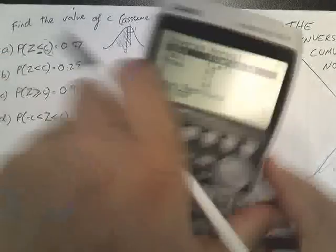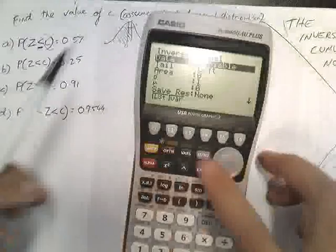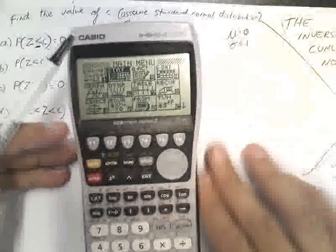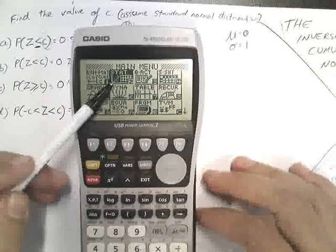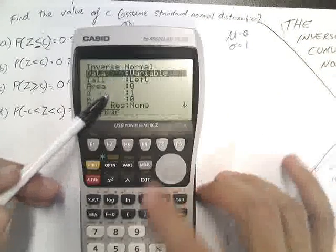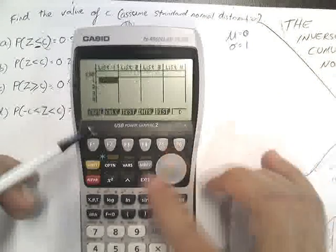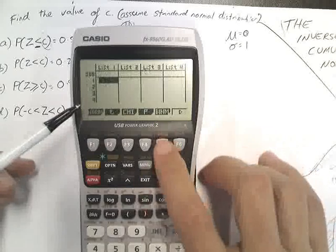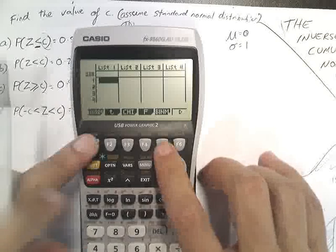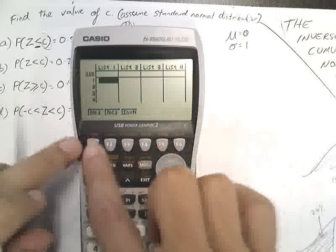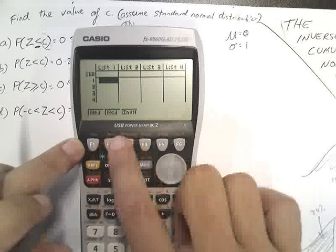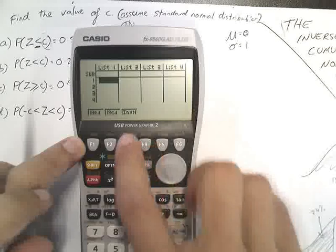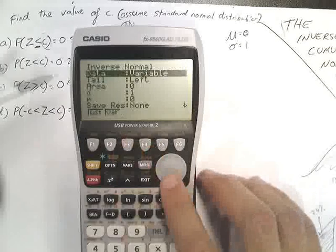Okay, let's take a look on our calculator. Go back to our menu. Get that out of the light. There we go. Now, go to stat mode. Try that again. Go to stat mode. Distribution. Normal distribution.